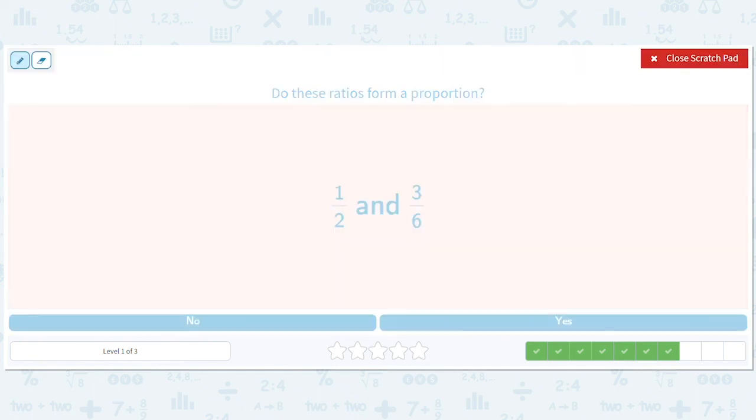How about one half and three sixths. So one half times six over three. We're ending with so many nice ones. Three over three is one. So yes.